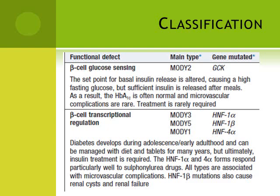Other functional defects responsible for MODY 3, 5, and 1 involve beta cell transcriptional regulation. In MODY 3 the mutated gene is HNF1-alpha, in MODY 5 it is HNF1-beta, and in MODY 1 it is HNF4-alpha. Diabetes develops during adolescence or early adulthood and can be managed with diet and tablets for many years, but ultimately insulin treatment is required. The HNF1-alpha and HNF4-alpha forms respond particularly well to sulfonylurea drugs. All types are associated with microvascular complications, and HNF1-beta mutations also cause renal cysts and renal failure.